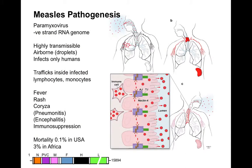Pathogenesis: measles is considered the most pathogenic virus — essentially the most pathogenic disease — known in the world. It transfers via airborne droplets or aerosols, enters through the oral or nasal cavity, and goes into the lungs. At the lungs, it infects immune cells first, which then disseminate throughout the body. Later, those immune cells return to the lungs or lymph nodes, and the virus is released through the respiratory epithelium. It traffics inside infected lymphocytes and monocytes.